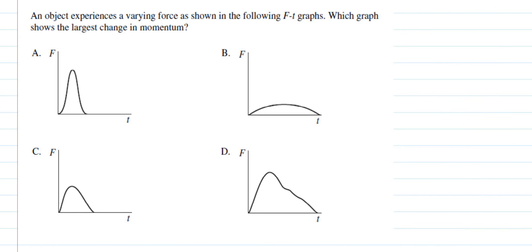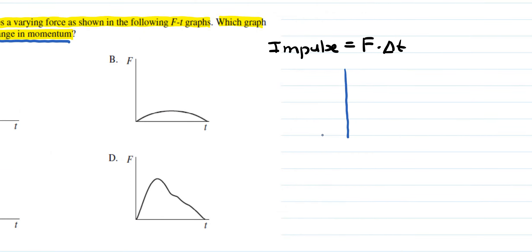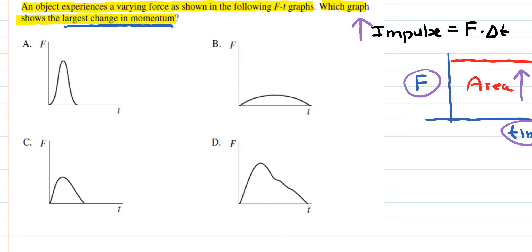In a variation question, an object experiences varying forces shown on F-t graphs, and we need to find which shows the largest change in momentum. Since impulse = force × Δt, and impulse equals change in momentum, we want the graph with the biggest area underneath the curve. By inspection, option D has the largest area under the curve, representing the greatest impulse and largest change in momentum.